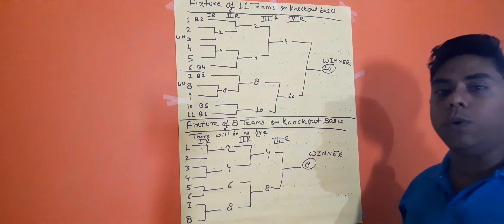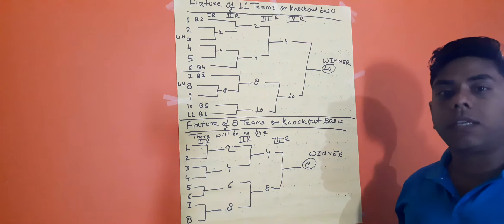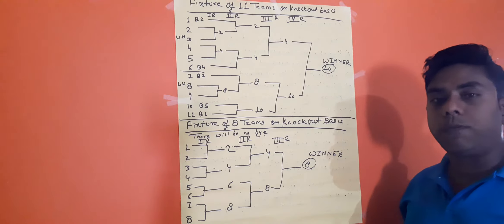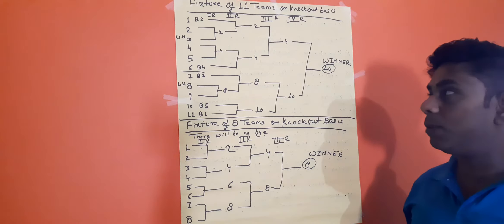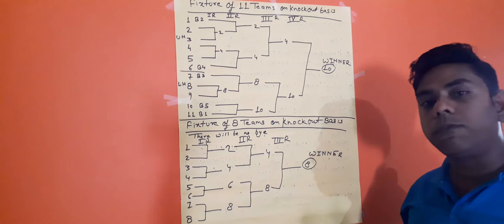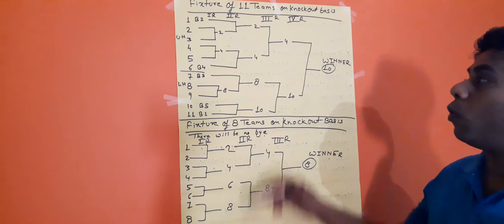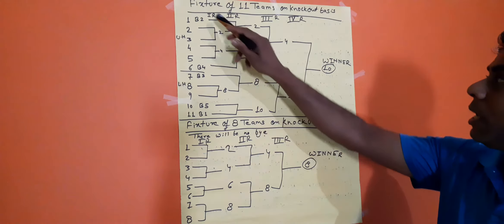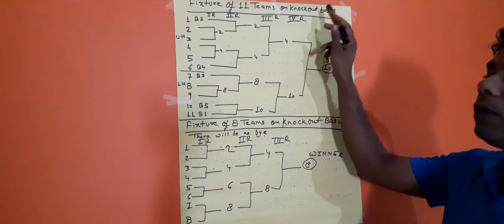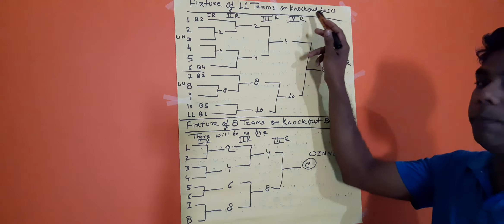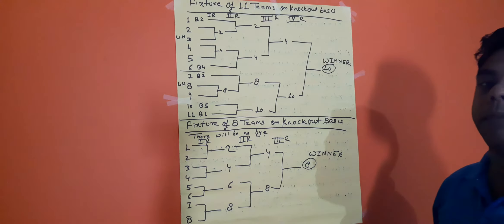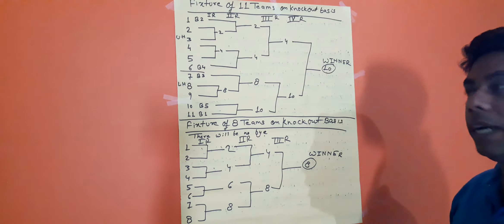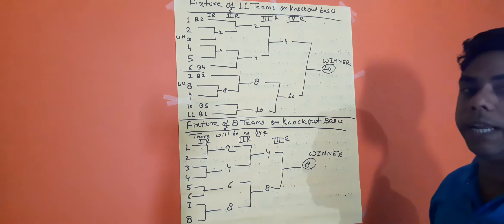In my previous video, I have discussed about what is a tournament, types of tournament, and the important points for making the fixture of 11 teams on a knockout basis — 11 teams, 12 teams, 15 teams, or 50 teams.